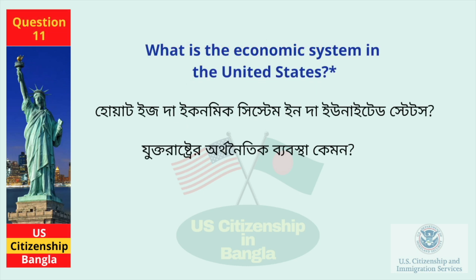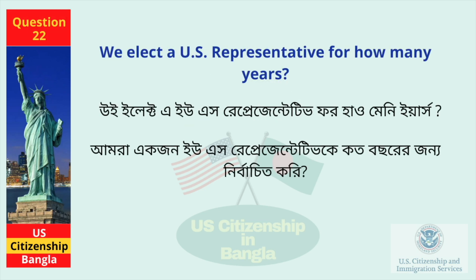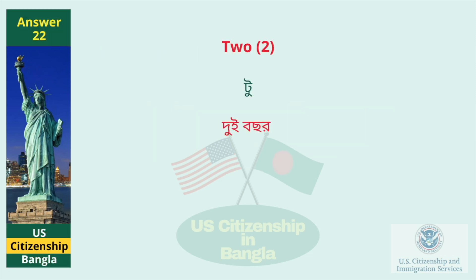What is the economic system in the United States? A capitalist economy. We elect a U.S. representative for how many years? Two.